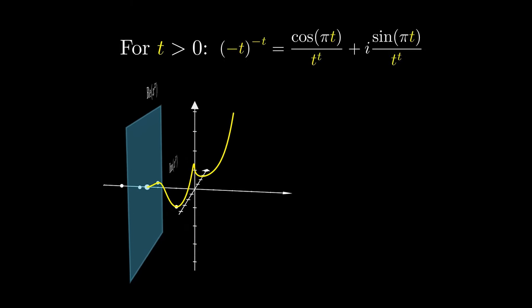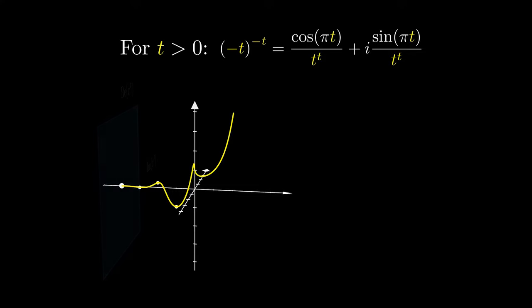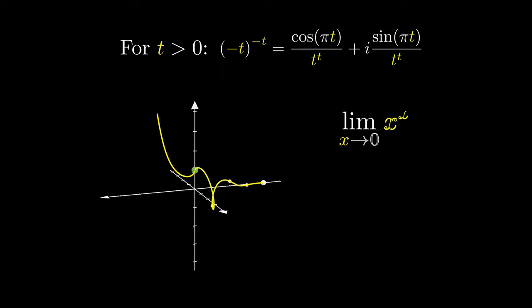This gives us the full graph of y equals x to the x, even when x is a negative non-integer. This curve has a point in the center right over there. It's given by the coordinates, which suggests to us that as we take x approaching 0 on either side, we're going to approach the number 1.